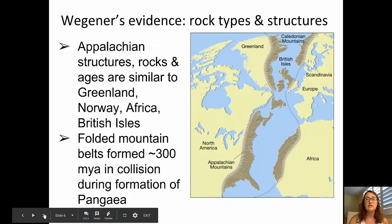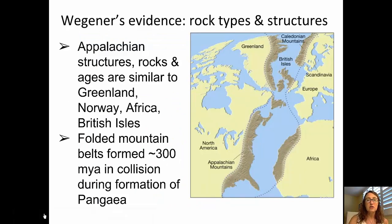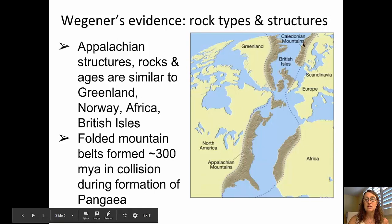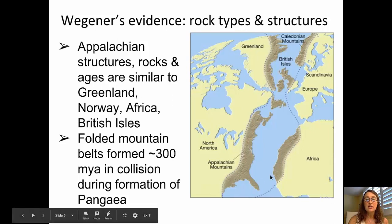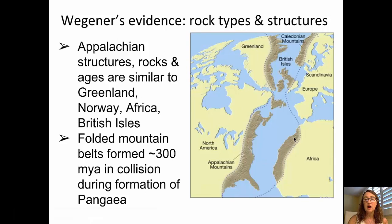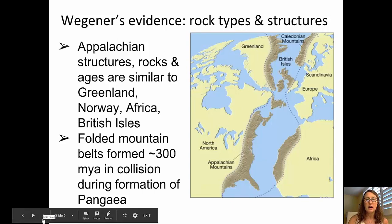An additional piece of evidence Wegener pointed to was rock structures, rock types, and ages that are similar on either side of the Atlantic Ocean. The Caledonian Mountains in Scandinavia show the same rocks, structures, and ages found in the British Isles, along the eastern coast of Greenland, down the eastern coast of North America, and across the northwest tip of Africa. These are folded mountain belts that formed about 300 million years ago during the actual formation of Pangaea.